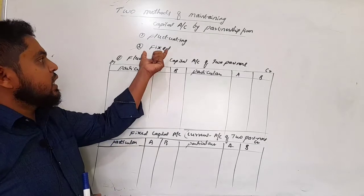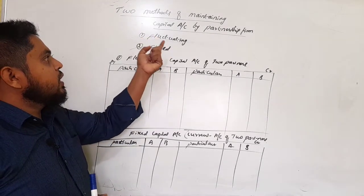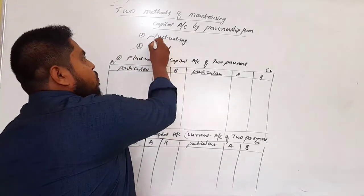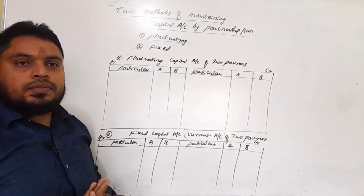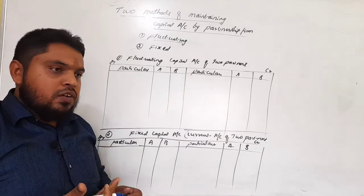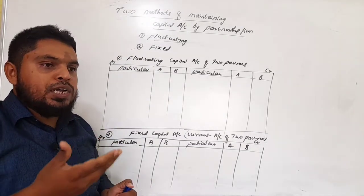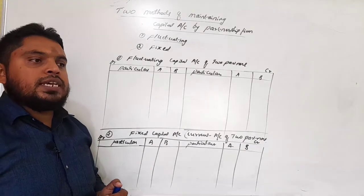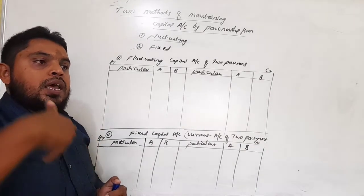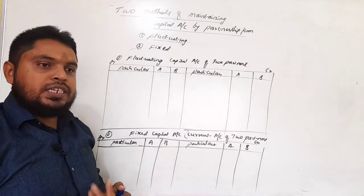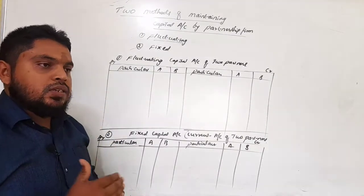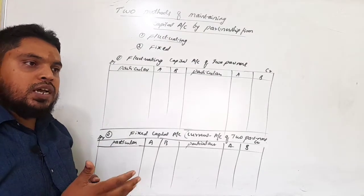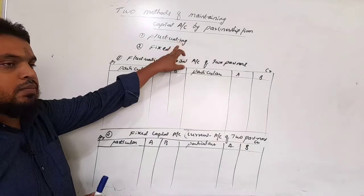Partners will maintain their accounts under the fluctuating capital method or the fixed capital method. The word 'fluctuating' itself says it all — the capital of a partner will change every year. Whatever capital they invest this year, that capital will be different next year. So whatever capital they invest will not be fixed; it will fluctuate year by year. That is the fluctuating capital system.